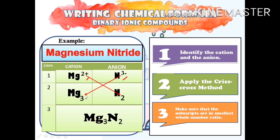In step 3, we make sure the subscripts are in the smallest whole number ratio. Looking at the subscripts 3 and 2, we cannot simplify these further — they are already in the smallest whole number ratio. So the chemical formula for magnesium nitride is Mg₃N₂. This means that to produce a molecule of magnesium nitride, we need 3 atoms of magnesium and 2 atoms of nitrogen.